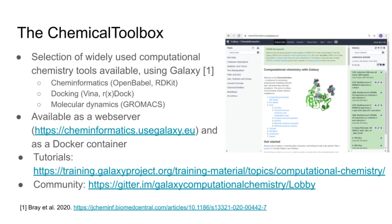We have about 100 different tools in total. The Chemical Toolbox is available either as a web server via cheminformatics.usegalaxy.eu or as a Docker container, which makes it convenient to run locally. We've created several tutorials providing introductions to different aspects of computational chemistry, in particular molecular dynamics, including one that accompanies this project so users can repeat the workflows on their own or smaller datasets. We have a reasonably sized and active community on Gitter developing new tools and workflows, so if you're interested in computational chemistry in Galaxy, you're very welcome to join.